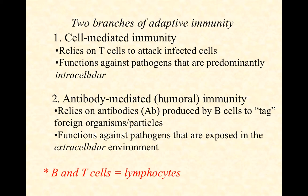T cells are involved in both branches. Helper T cells are communicating cells that can direct the cytotoxic T cells and activate them, and they can direct the B cells and activate them as well. These are the pieces and components of the adaptive immune system.